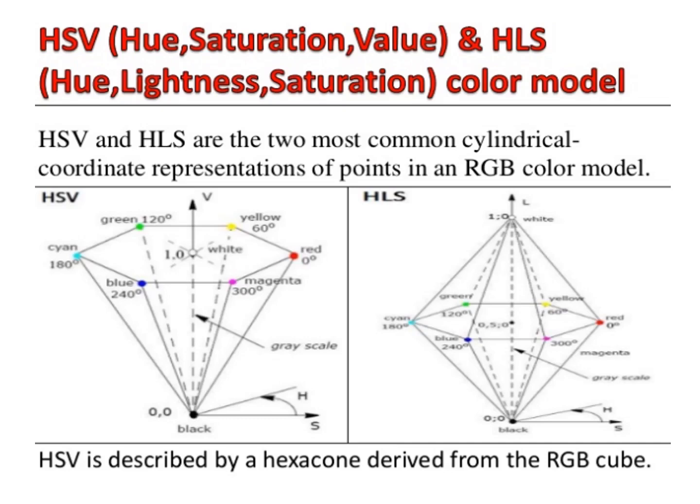Another model based on intuitive color parameters is the HLS color model used by Tektronix. The three color parameters are hue, lightness, and saturation. It is represented by a double hexagon. The hue H specifies the angle around the vertical axis of the double hexagon. In this model, H=0 degrees corresponds to blue. Magenta is at 60 degrees, red is at 120 degrees, and yellow is at H=180 degrees. Complementary colors are 180 degrees apart.